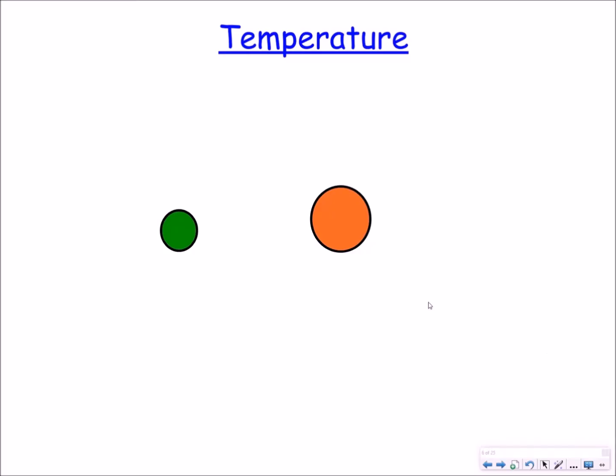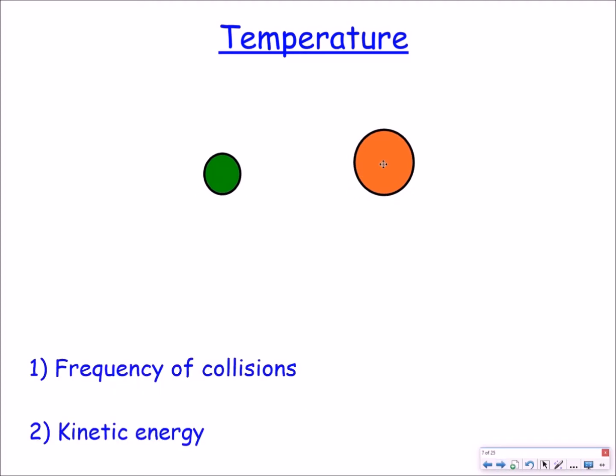So the first factor we're going to be looking at is temperature. What temperature does to particles is that it makes them move faster and this does two things. Number one, it increases the frequency of collision so the particles are more likely to collide. And also if the temperature is high enough, the particles have enough kinetic energy so that when they collide a reaction takes place.